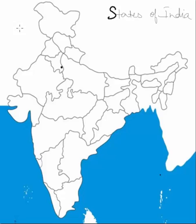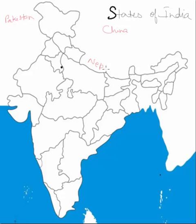Before we start, I'll mark the neighboring countries. We have Pakistan to our west, China in the northeast, Nepal here, then Bhutan, and in the eastern part of the country we have Bangladesh. This will also help us remember the names of the various states.